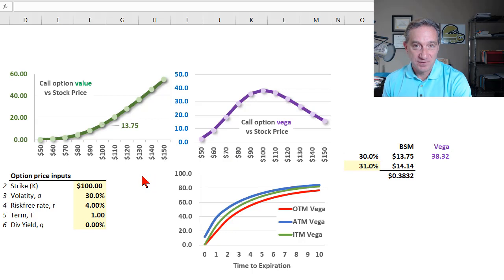My last two or three videos in this playlist looked at option Delta and option Gamma, which are respectively the first and second partial derivatives of the option value with respect to a change in the stock price. Now I look at vega, which is also a first partial derivative, so vega is a sibling to Delta and also to Rho and Theta.